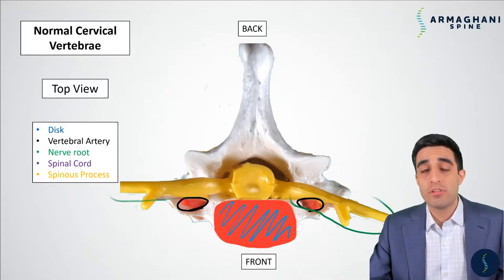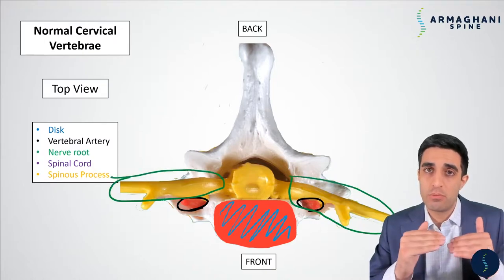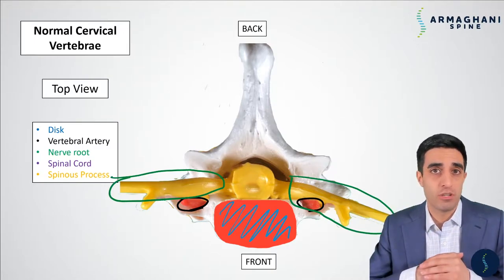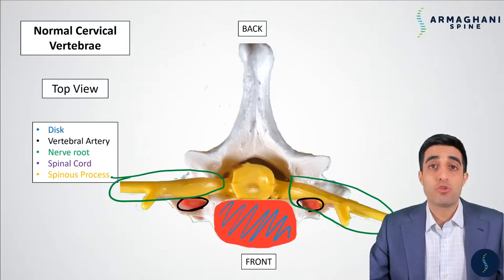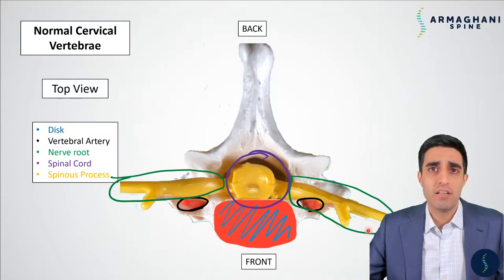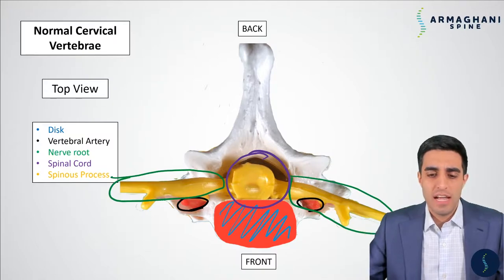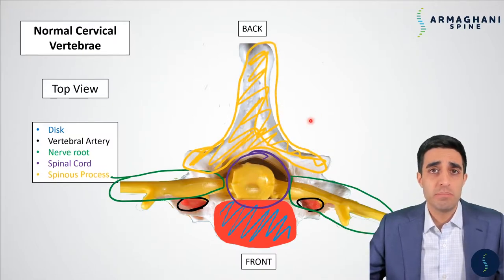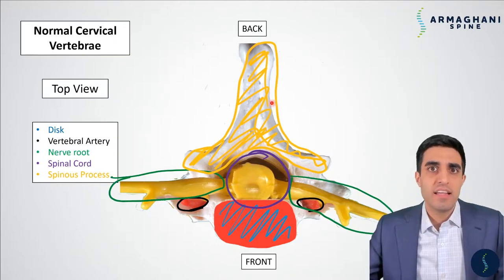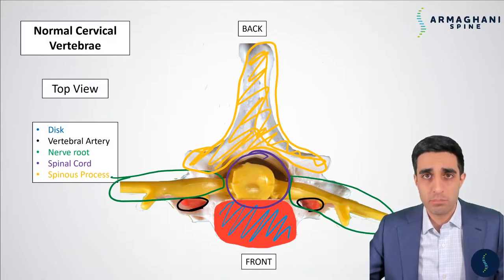Next, we have the nerve roots, which come off in between vertebrae at each area of the cervical spine and go down to specific areas of your arm or upper back. The spinal cord is highlighted here in purple. The area where the spinal cord lives is what we call the spinal canal, bordered by the disc space in the front and the spinous process and lamina immediately behind it. When you touch the back of your neck, that very tip of the bone you feel is the tip of that spinous process.